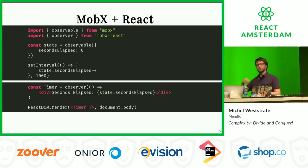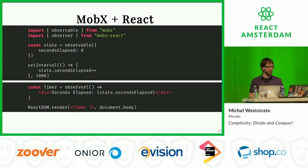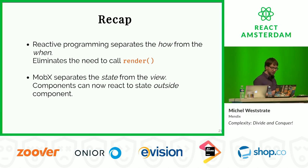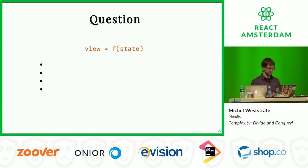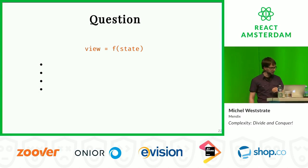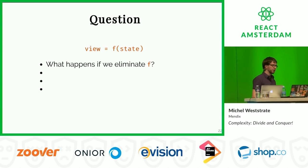What MobX in combination with React allows you to do is have state outside of your component and still subscribe to it. Here we have the same example but with state living outside the component - and nonetheless the component will still reactively react to that state. As a short recap: reactive programming separates the how from the when, and MobX helps you separate the state from the view.